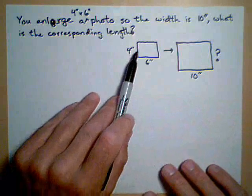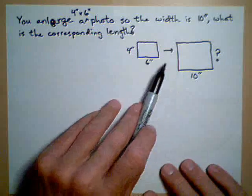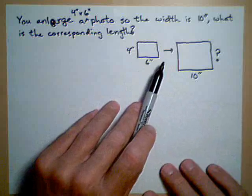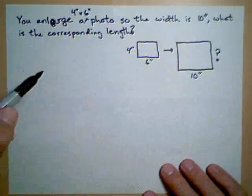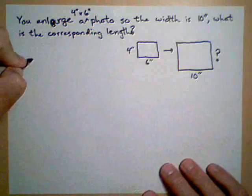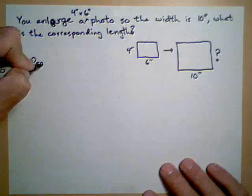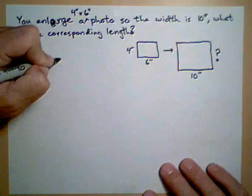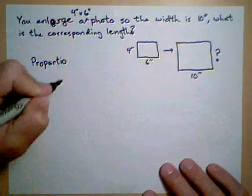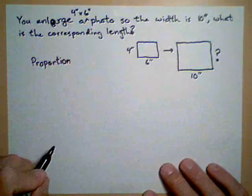Because we have to maintain a ratio between the two photos, otherwise it will become distorted, one way of solving this is to set up what's called a proportion. A proportion is where two ratios are equal to each other.